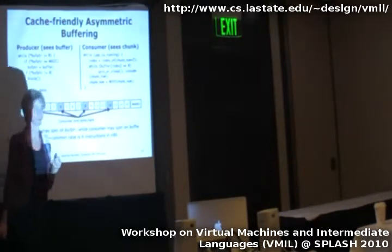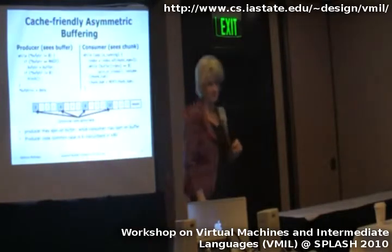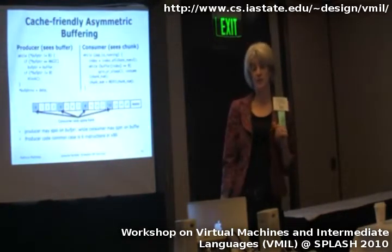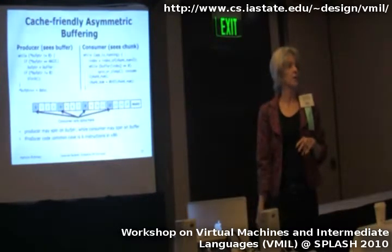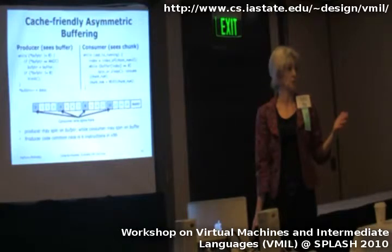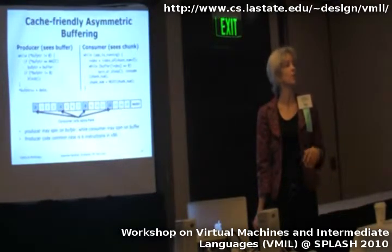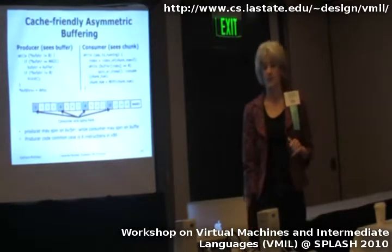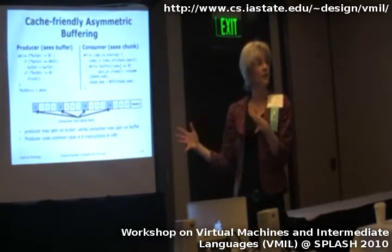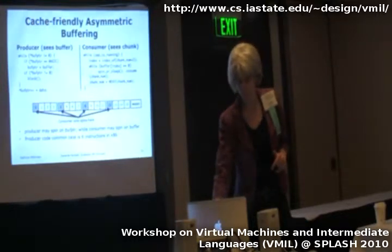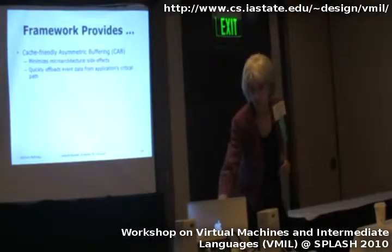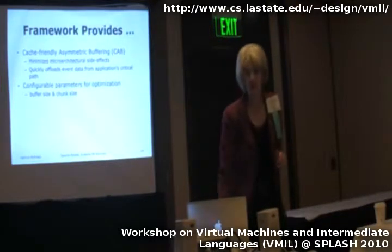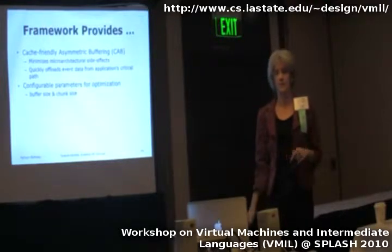This is the fast path and that's what you see most of the time. If you're using sampling, you don't necessarily have to make the producer block — you can just let the application ride over the data. But you still want to keep the consumer two cache lines worth of data away. The framework provides this asymmetric buffering and minimizes architectural side effects.